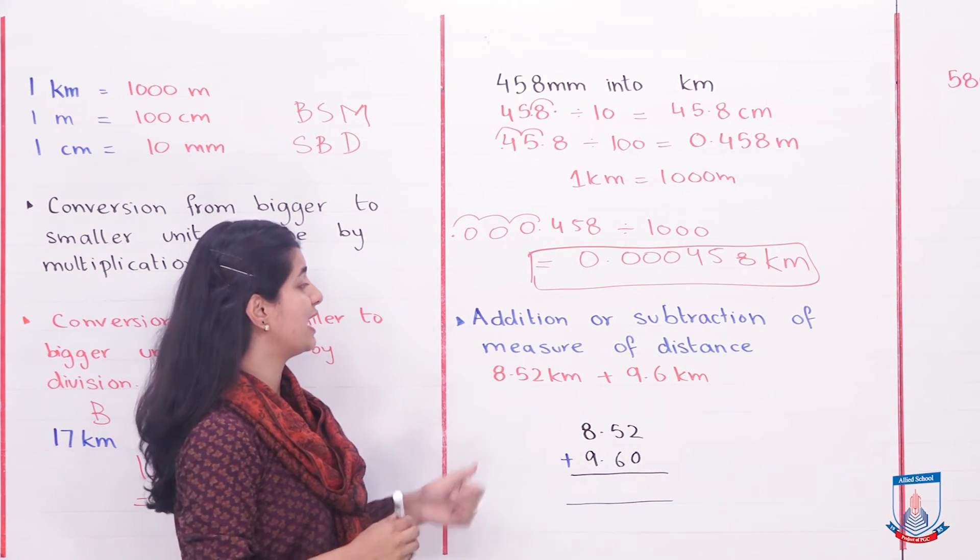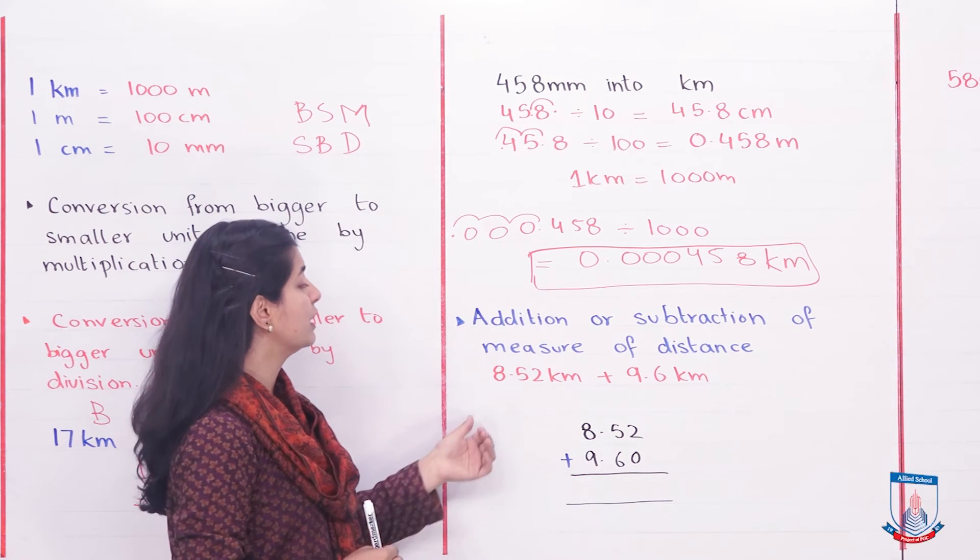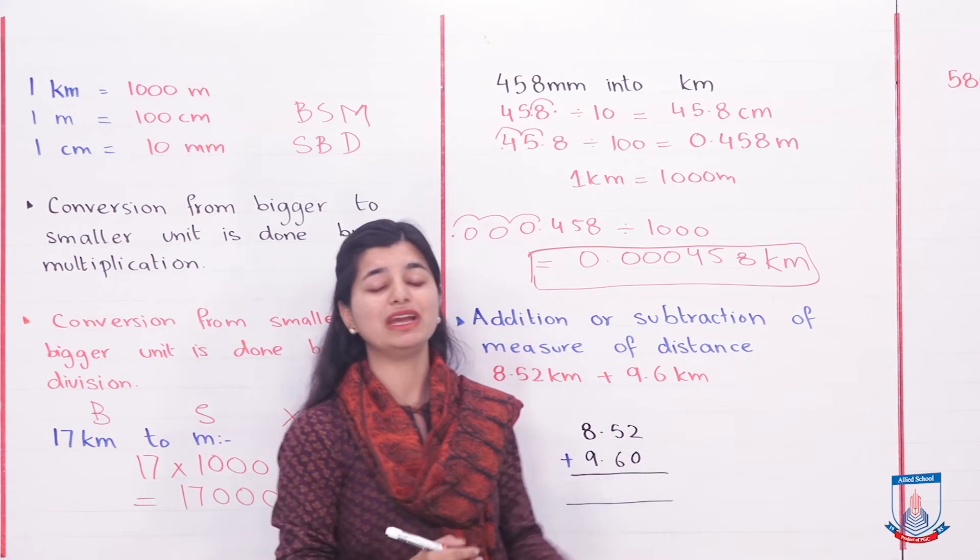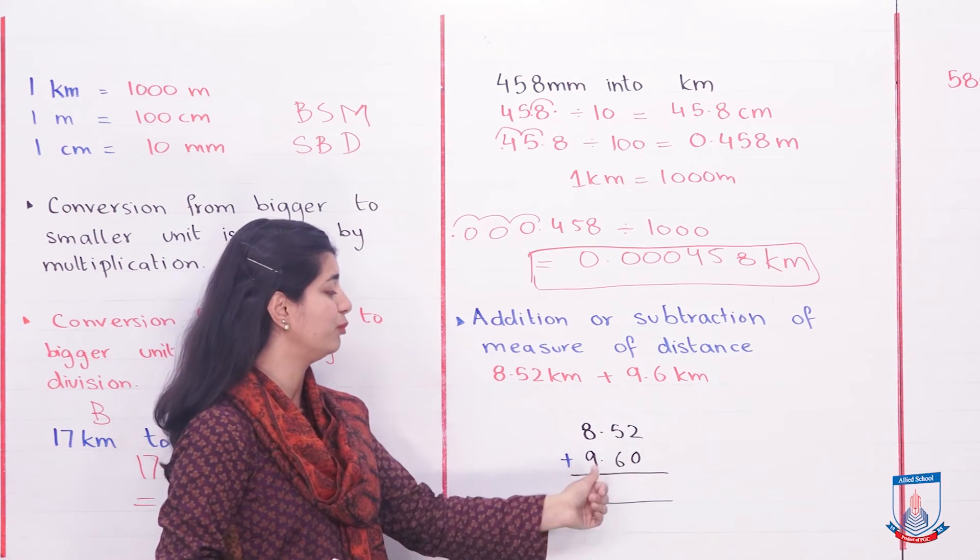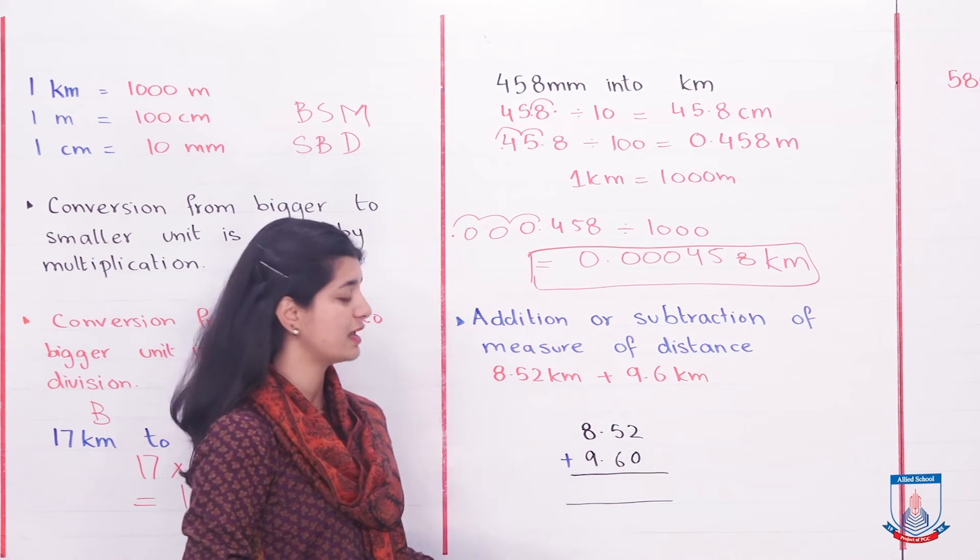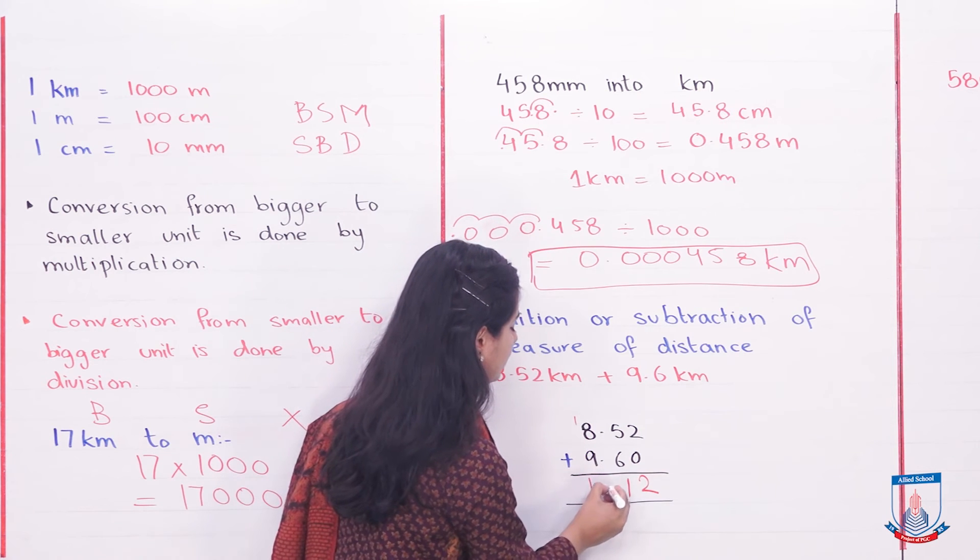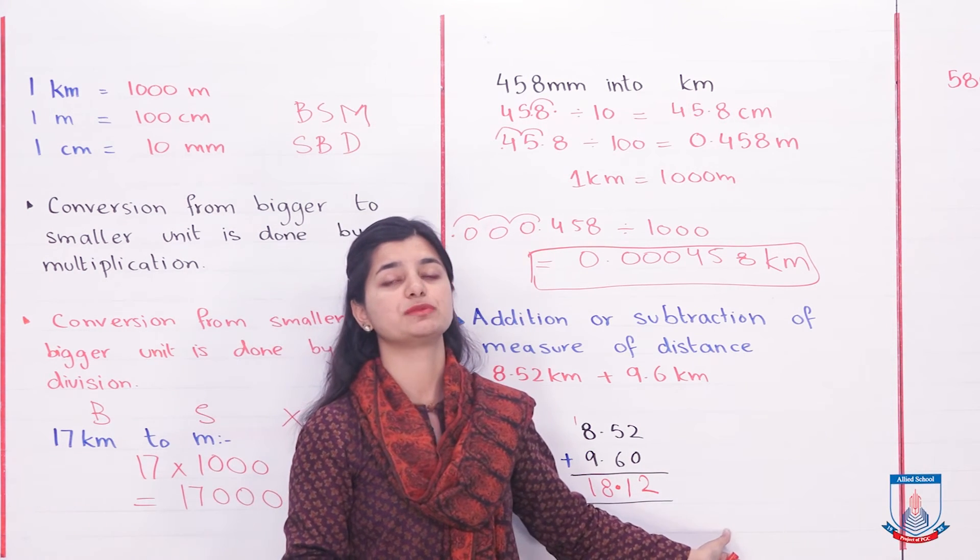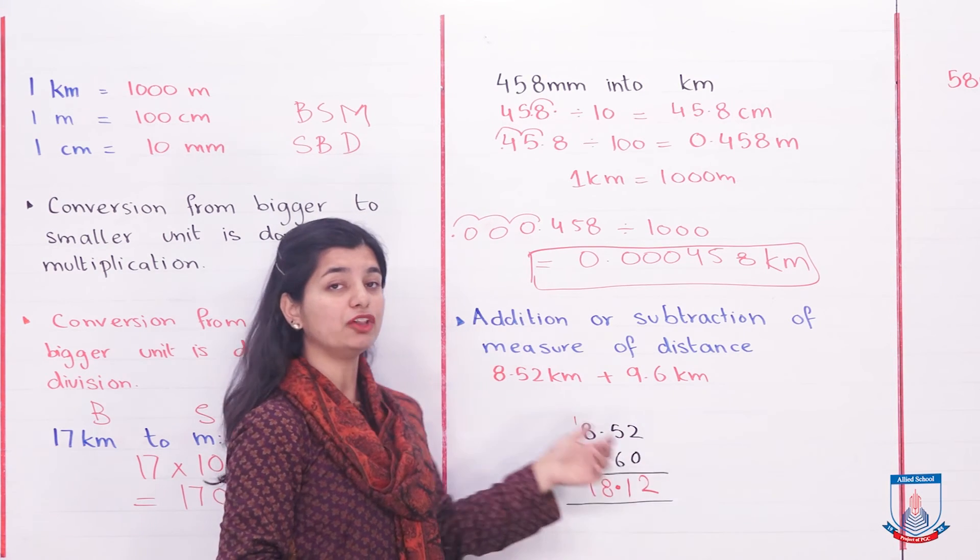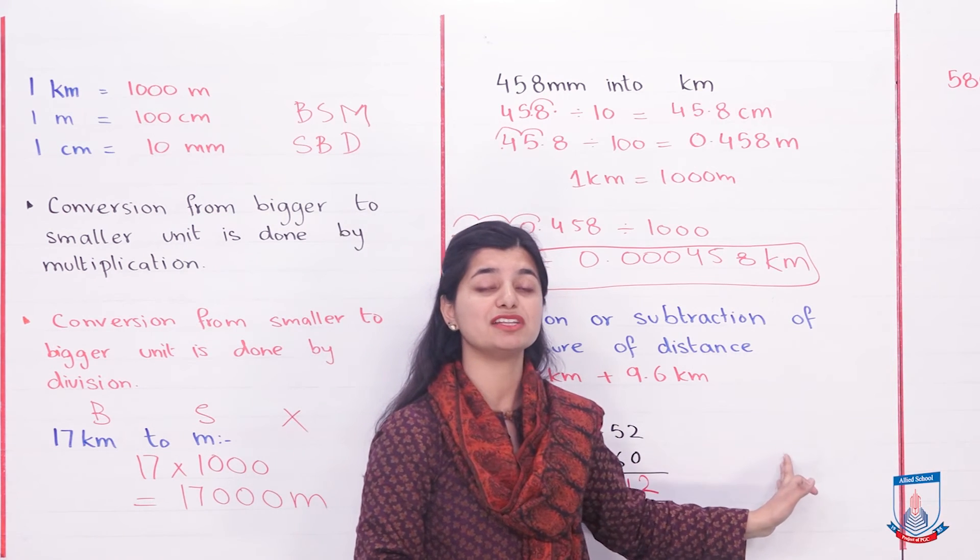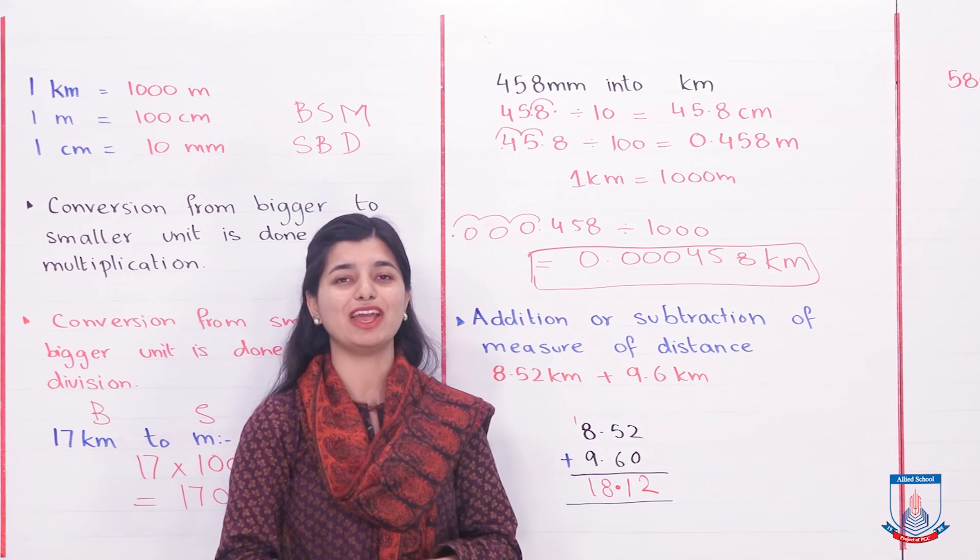Next, we'll discuss addition and subtraction of these distances. How can we add and subtract these values? It's quite basic - 8.52 plus 9.6, the same decimals addition that you learned. You write it properly in decimal form with placement aligned. Since it was 9.6, I added a zero to make like decimals. Now I add them: 2 plus 0 is 2, 5 plus 6 is 11 (carry 1), decimal in its place, 8 plus 9 is 18. So 18.12 is my answer. If you had two different units - one in kilometers and one in meters - you would make both the same unit. Either convert the kilometer to meters so both values are in meters, or convert both to kilometers.